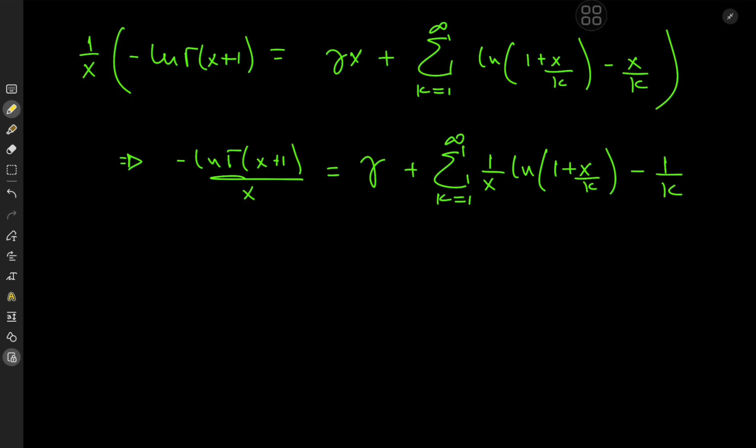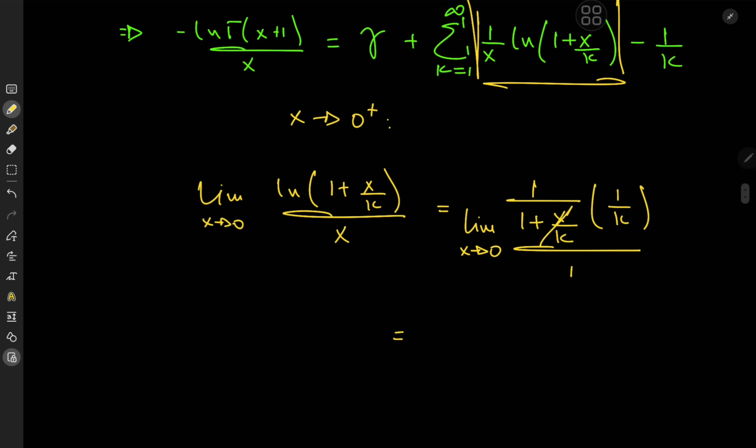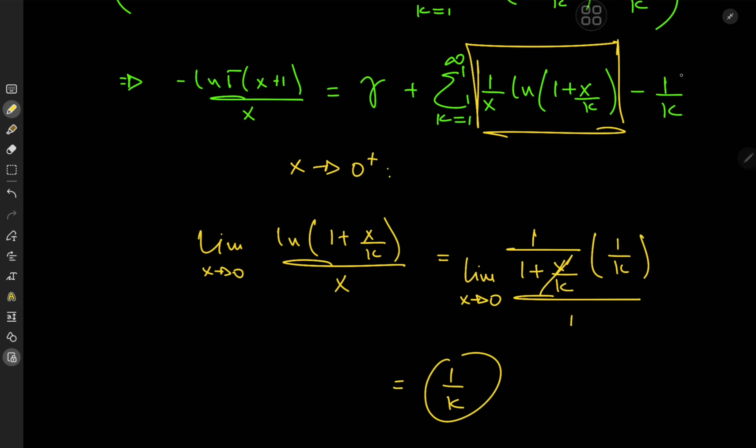And now it's finally time for L'Hôpital boy to shine because we're interested in x approaching 0 from the right. So we're gonna have to evaluate the limit of this thing here. So let's talk about the limit as x approaches 0 of log 1 plus x over k over x. So as x approaches 0 we get log 1 which is 0 in the numerator and denominator both approach 0. So we'll apply L'Hôpital's rule here and differentiate. So differentiating upstairs gives us 1 over 1 plus x over k and because of the chain rule we have this extra factor of 1 over k and in the denominator we have 1. And now applying the limit as x approaches 0 this thing just disappears and we're just left with 1 over k, which is pretty awesome because this 1 over k will cancel out with the 1 over k term over here.